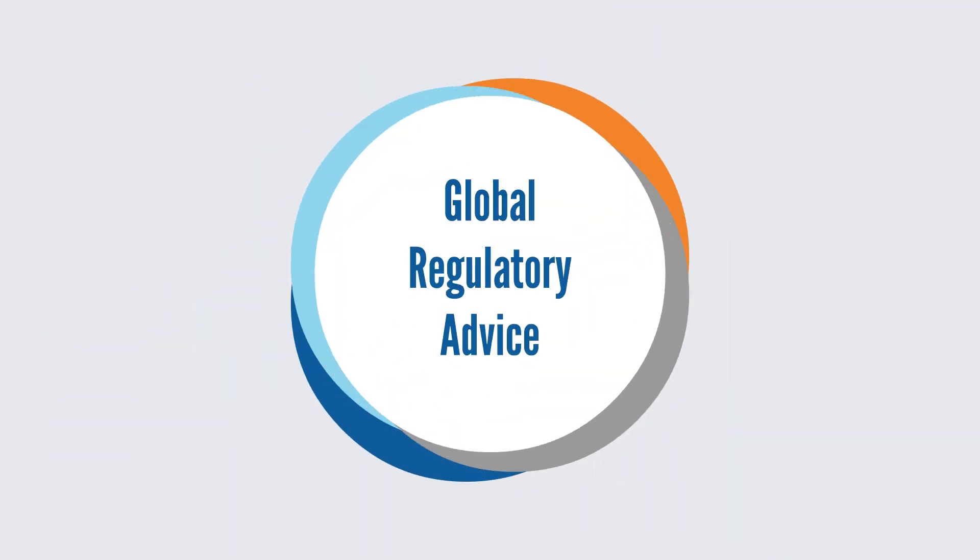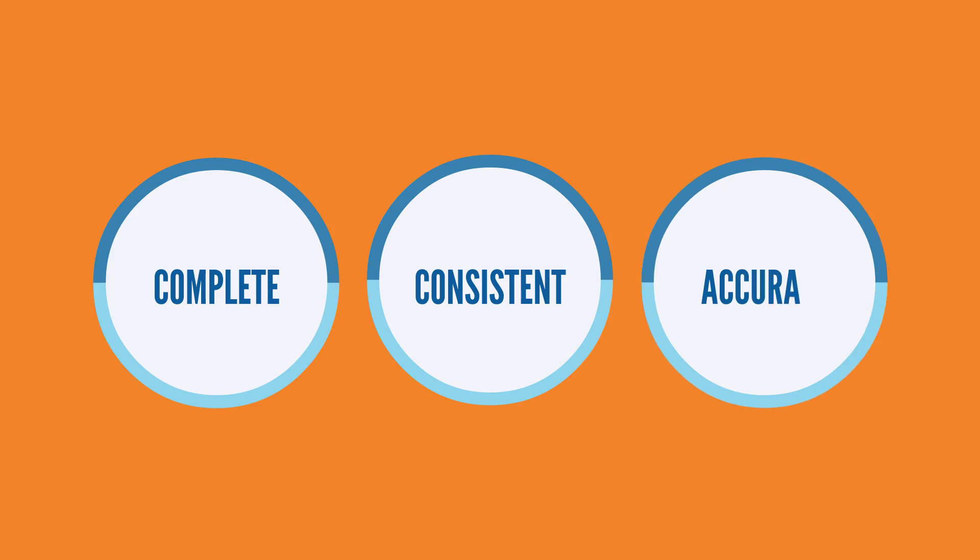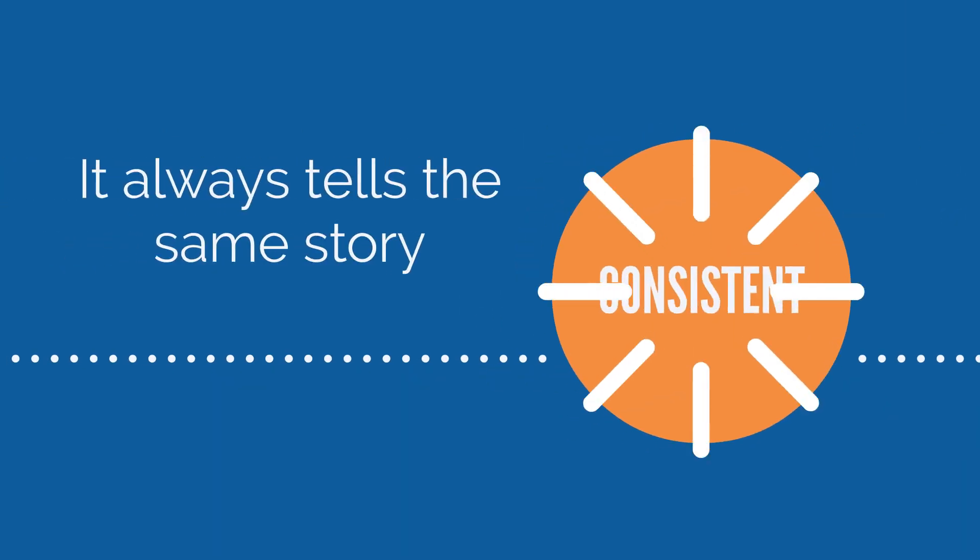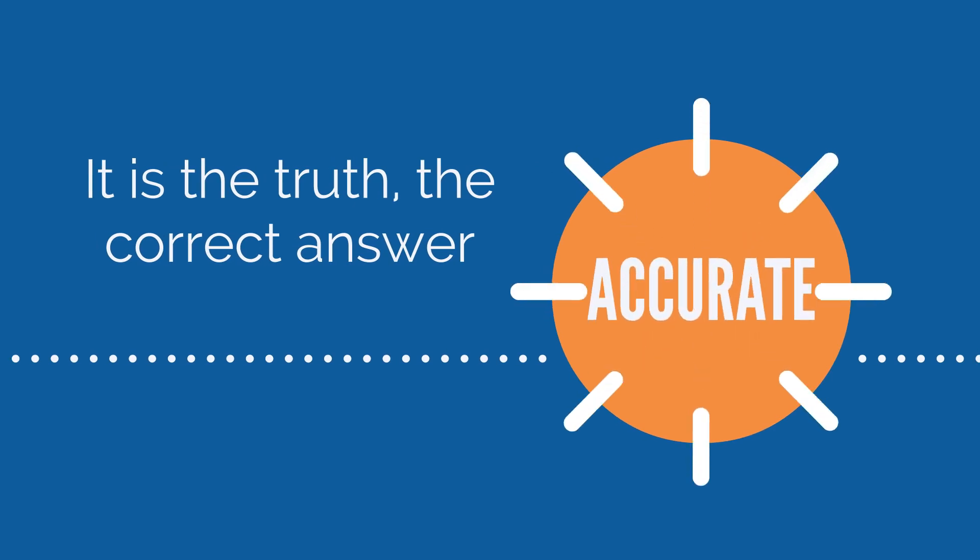To avoid these types of issues, we can look to the global regulatory advice. There is a clear common view on the requirements for your records and any data that is generated. Your data is always needed to be complete, consistent and accurate. Complete means that I have everything, not just the nice bits which pass. Consistent means that it always tells the same story, regardless of who is looking at it and when they look at it. Accurate is the truth, the correct answer.